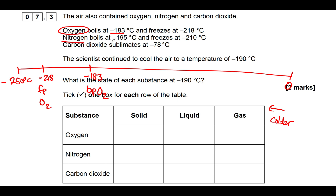The next one is nitrogen. Its boiling point is minus 195°C, which is a bit colder than minus 183, so that goes here. And then it freezes at minus 210°C, so that's the freezing point of nitrogen.